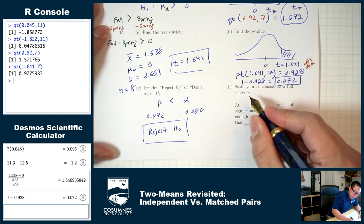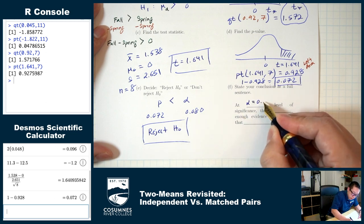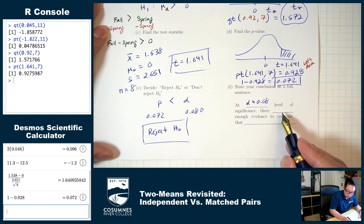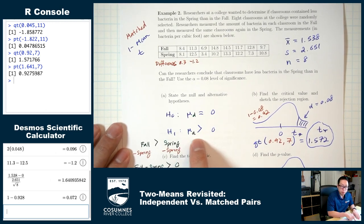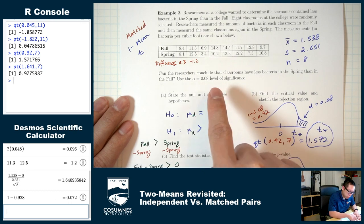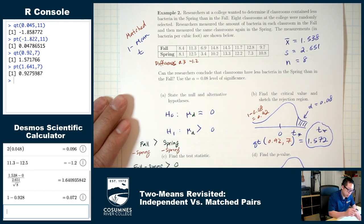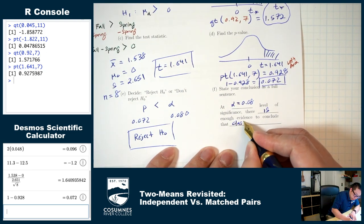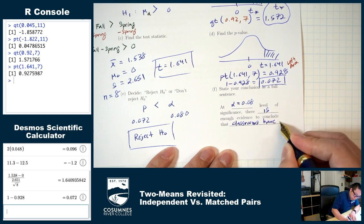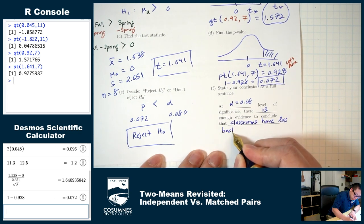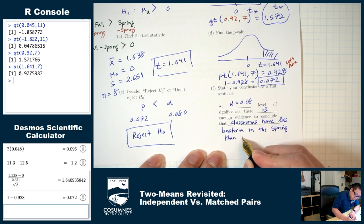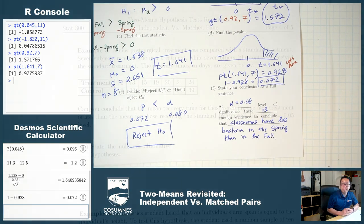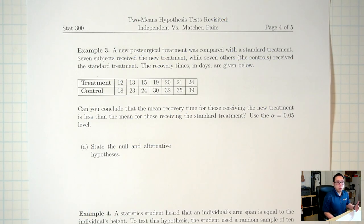Part F: at alpha = 0.08 level of significance, there is enough evidence to conclude that classrooms have less bacteria in the spring than in the fall. For the remaining examples in this section, let's just go through and decide whether it's independent or matched, and then write down the correct H0 and H1 — because that's the hardest part.